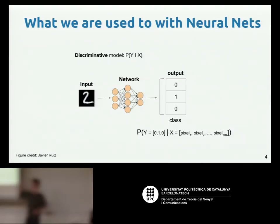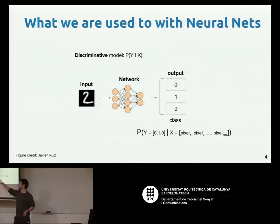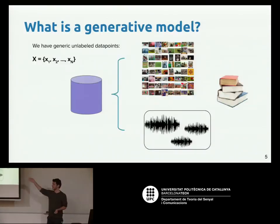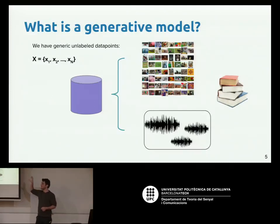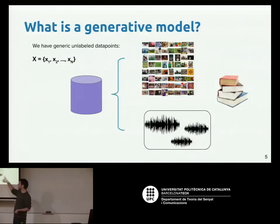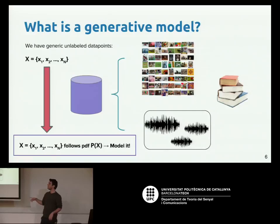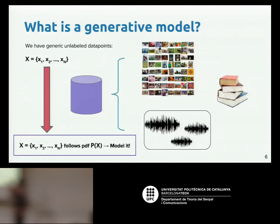The difference is between a discriminative model that says 'this is this label given this input image of the unrolled pixels,' or we can say: I have a bunch of data in a dataset — images, books, text, or waveforms — and we want our model to basically mimic the underlying generator producing those waveforms, pictures, or text. We want the model to replicate the distribution of the generation process: p of x.